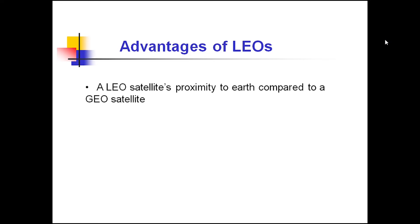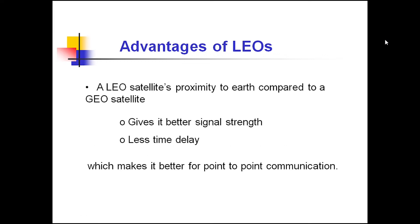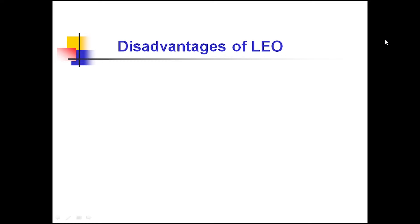LEO satellites are very close to Earth, and therefore the main advantage is they give better signal strength and there is less time delay in transmission. Therefore, they are particularly suitable for point-to-point communication.